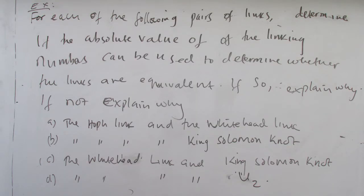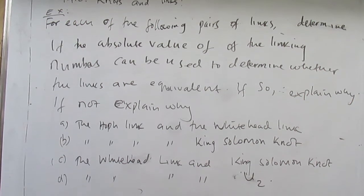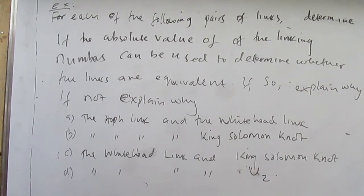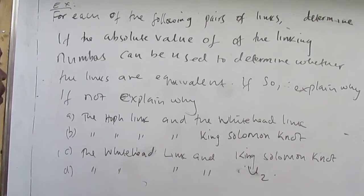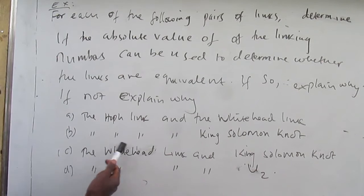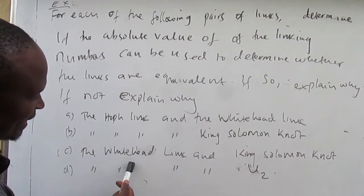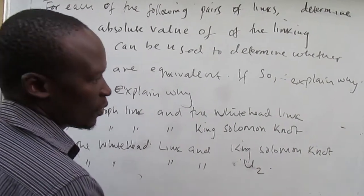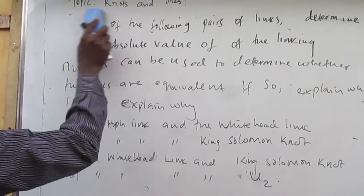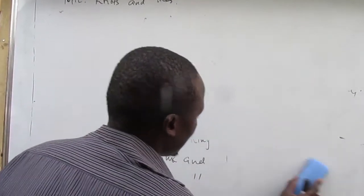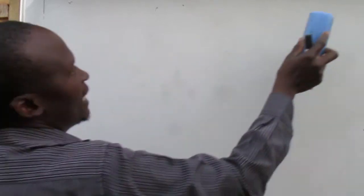An exercise: for each of the following pairs of links, determine if the absolute value of the linking numbers can be used to determine whether the links are equivalent. The pairs are: the Hopf link and the Whitehead link; the Hopf link and the King Solomon knot; the Whitehead link and the King Solomon knot; and the Whitehead link and the unknot of two components. We can also show that there are knots that cannot be unknotted, using tricolorability.